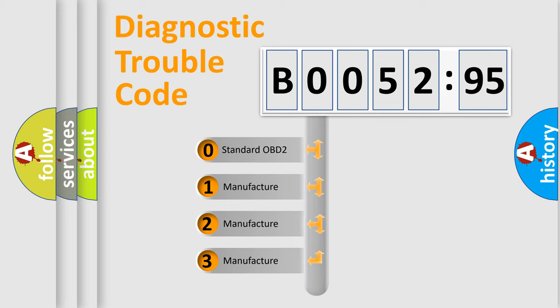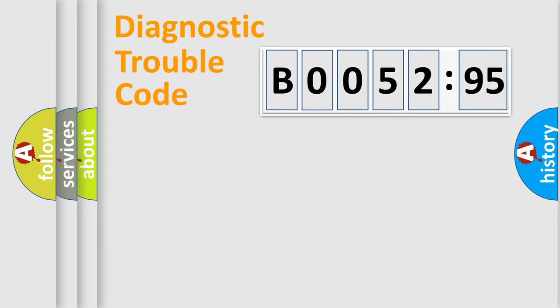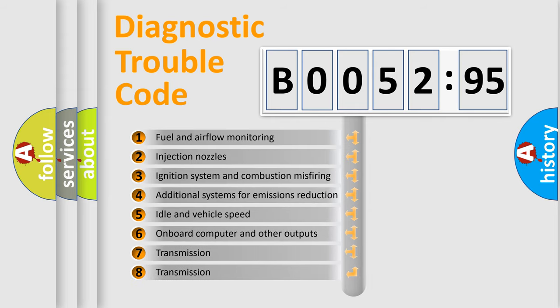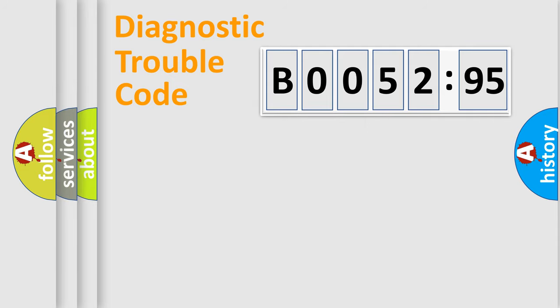If the second character is expressed as zero, it is a standardized error. In the case of numbers 1, 2, 3, it is a car-specific error. The third character specifies a subset of errors. The distribution shown is valid only for the standardized DTC code. Only the last two characters define the specific fault of the group.